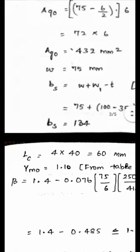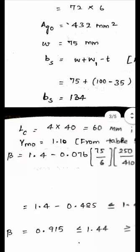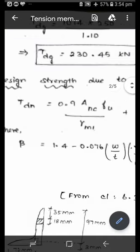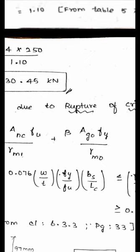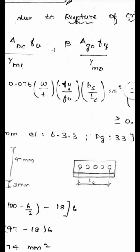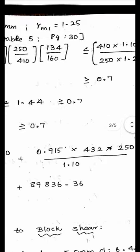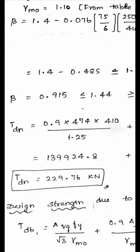Substituting into the TDN equation: TDN = 0.9 × ANC × Fu / γM1 + β × AG0 × Fy / γM0 = 0.9 × 474 × 410 / 1.25 + 0.915 × 432 × 250 / 1.1. Simplifying and dividing by 1000 gives TDN = 229.76 kN. TDG and TDN calculations are now complete.